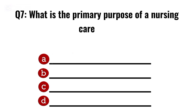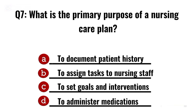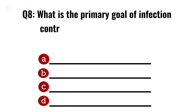Question 7. What is the primary purpose of a nursing care plan? Correct option C: To set goals and interventions.